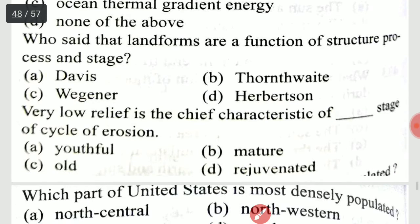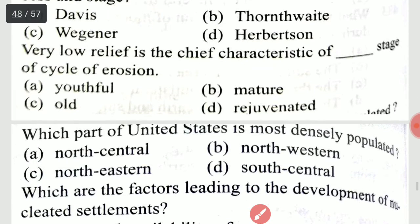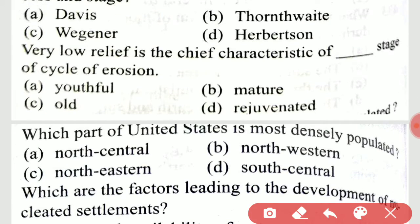Who said that landforms are a function of structure, process, and stage? It is Davis. A very low gradient is the chief characteristic of the old stage of the cycle of erosion.